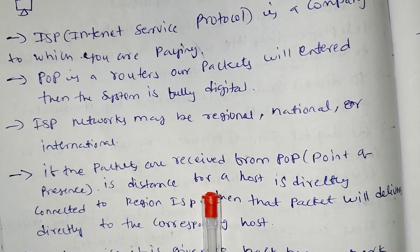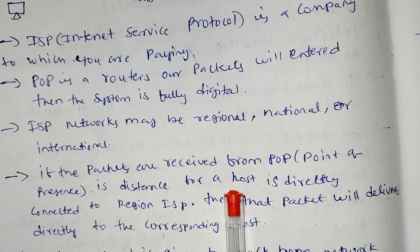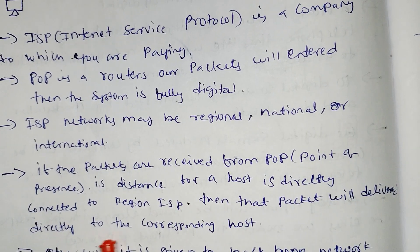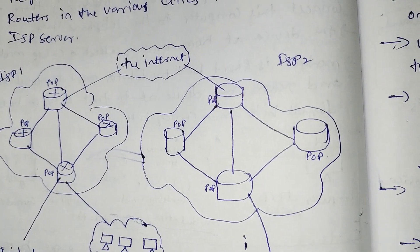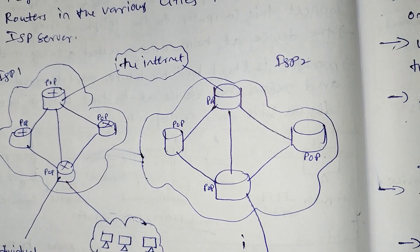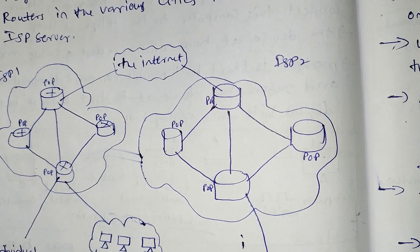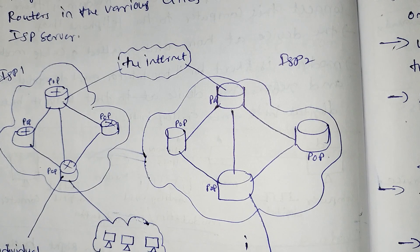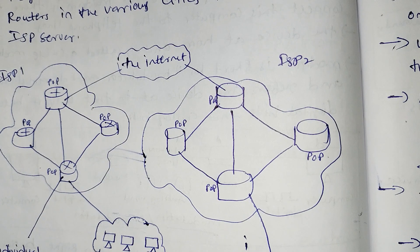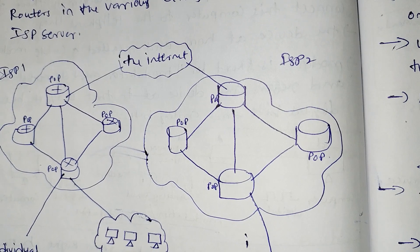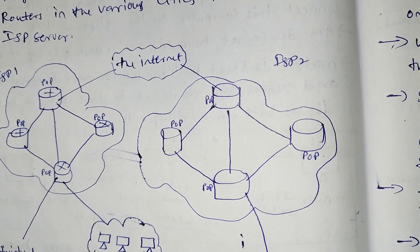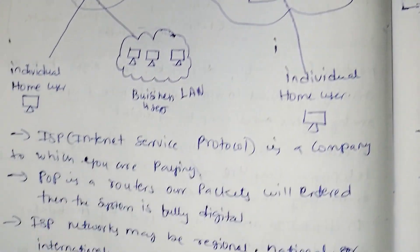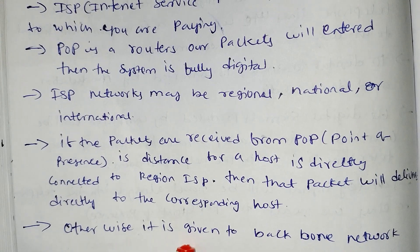If the packets are received from the POP, the Point of Presence, and the destination host is directly connected to the regional ISP, then the packets will be delivered directly to the corresponding host. If people use the internet at a distance, we connect directly to the host via the regional ISP. Otherwise, packets are given to the backbone network.